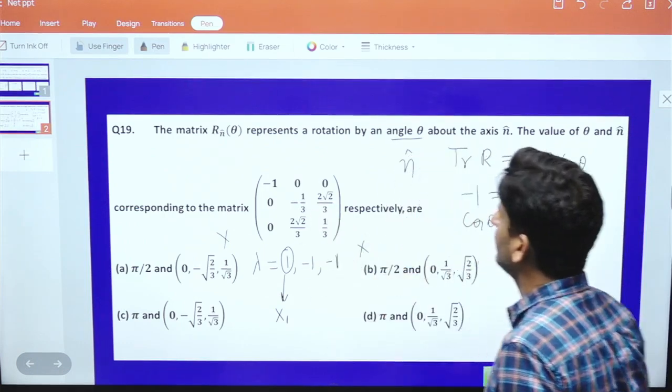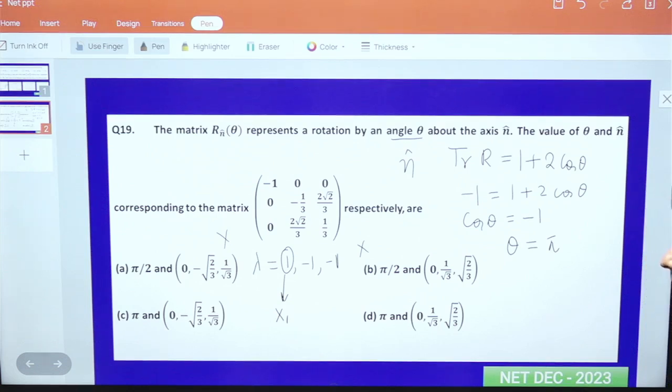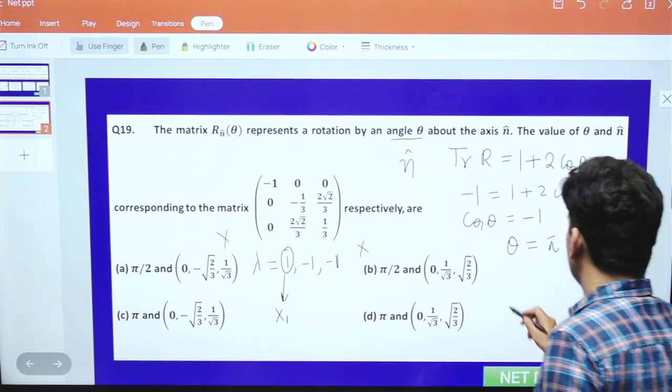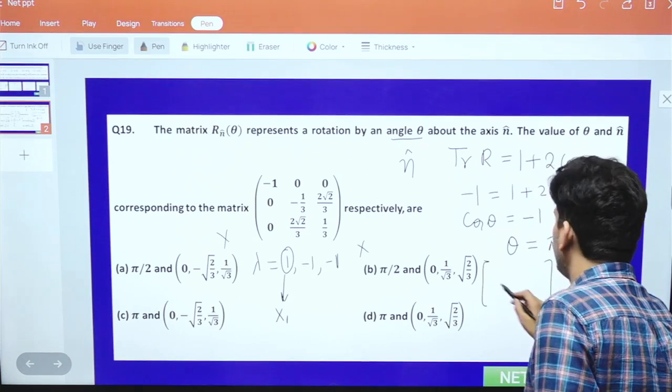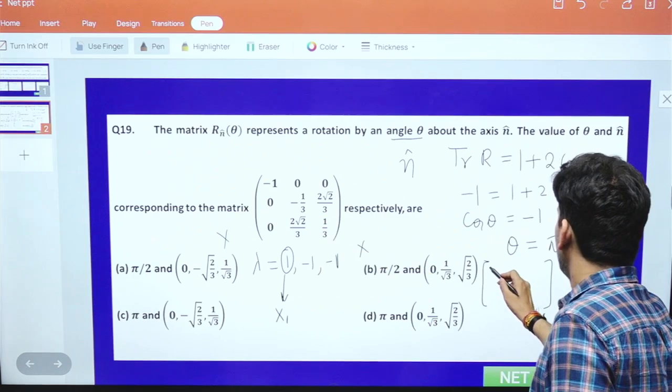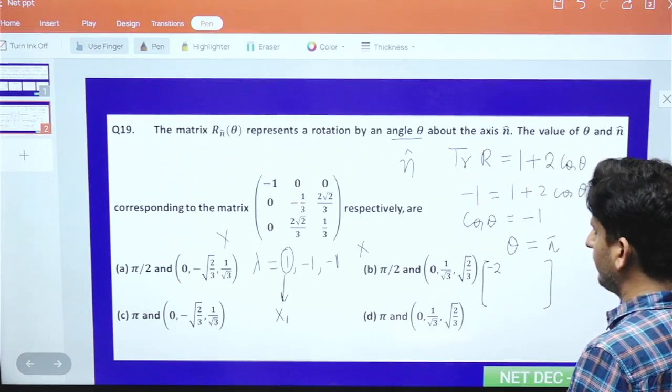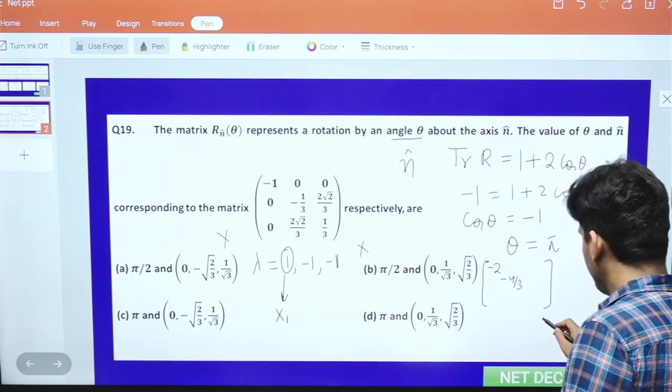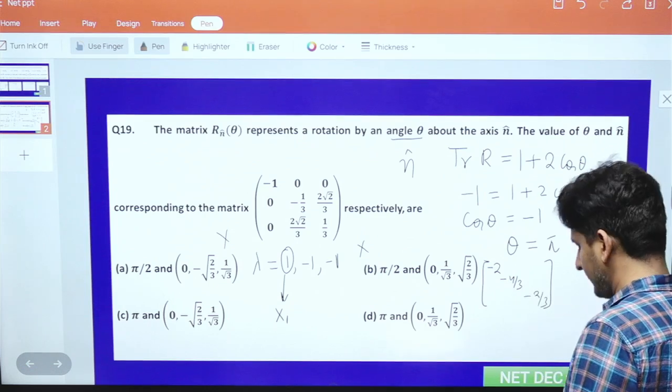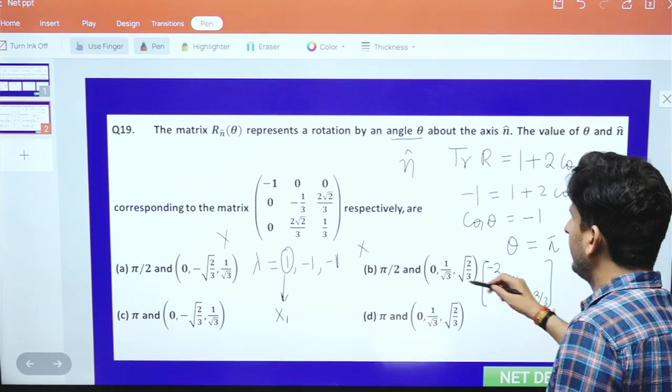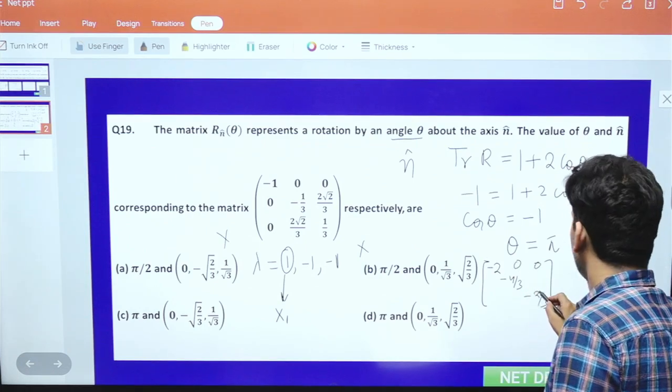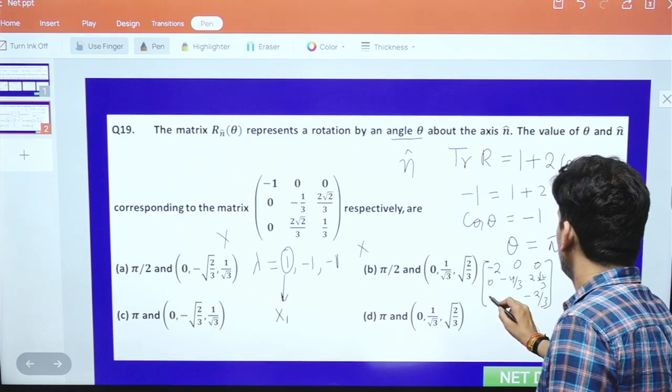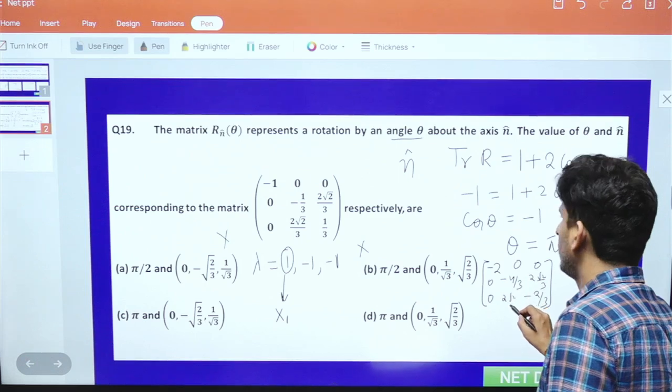To calculate this, write the matrix equation. The elements are: minus 4/3, minus 2/3; then 0, 0, and 2 root 2 by 3; and 0, 0, 2 root 2 by 3, corresponding to lambda equals 1.